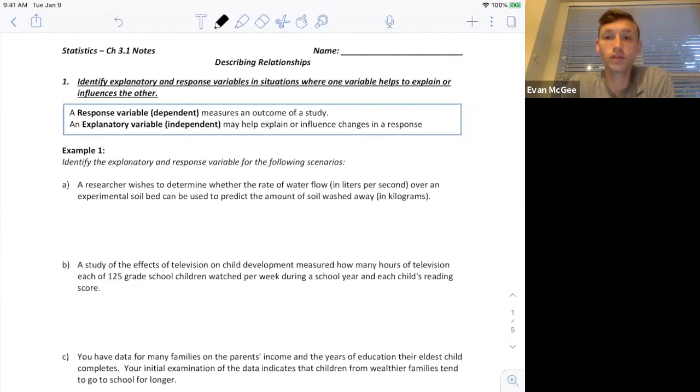This is the first of the 3.1 videos, and we're going to look at how two quantitative variables relate together instead of categorical variables. In order to do that, we have to be able to identify which variable is the explanatory and which one is the response variable. And it's really quite simple. I'm sure you've done it before. You may have heard of the dependent and independent variable.